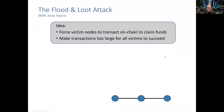The third attack is joint work with Jonah Harris. This attack — called 'flood and loot' — targets the point where players must go to the blockchain to reclaim funds. We cause blockchain congestion by running this attack in parallel on many victims. Unlike the previous attacks, this one actually allows us to steal money from victims, not just block the network. With $75 million locked in the Lightning Network, there's potential for significant theft.